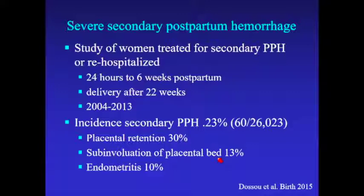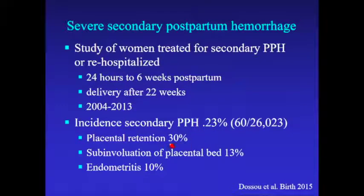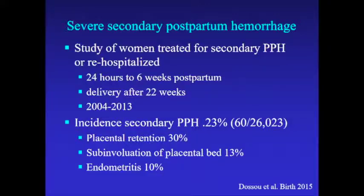Severe secondary postpartum hemorrhage is when a patient has already delivered and then presents later with bleeding — defined as 24 hours to 6 weeks postpartum after delivery past 22 weeks. In one large cohort over 9 years, the incidence was 0.23% — 60 out of 26,000 deliveries. Placental retention was the cause in 30%, subinvolution of the placental bed in 13%, and endometritis in 10%.